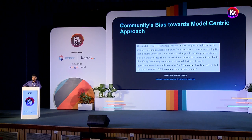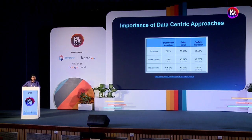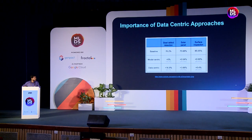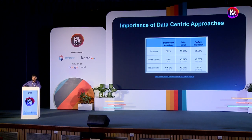We are not alone in being biased towards model-centric approaches. In the Kaggle steel sheets defect detection challenge, the baseline model had an accuracy of 76.2%. When people tried model-centric approaches, the improvement was only around 0.04%. But when people started using data-centric approaches, accuracy improvements went up to 16%. Just to be cautious — it's not that in every case accuracy will improve with data-centric approaches, but we should definitely consider this while doing our AI work.